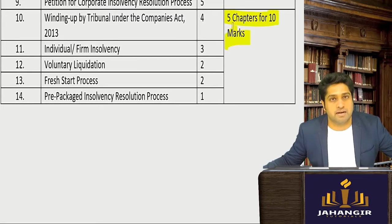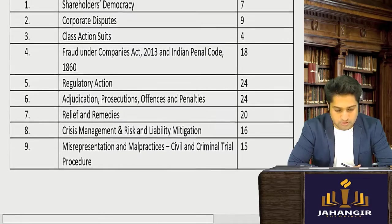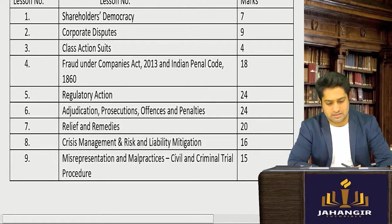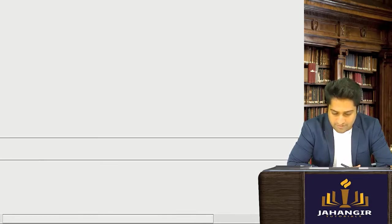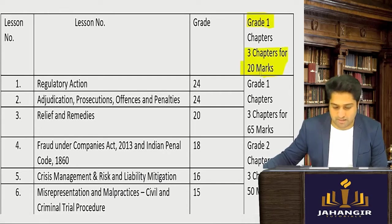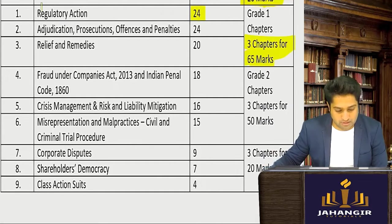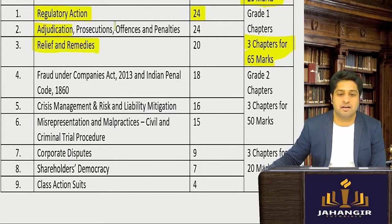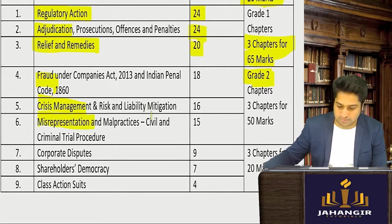Next comes corporate disputes. There are very few chapters, and the exam asks from every single chapter. But some chapters have high weightage. Grade one chapters are three chapters for 65 marks in your exams — that's regulatory action, adjudication, relief and remedies. Grade two chapters include fraud, crisis management, and misrepresentation — three chapters for around 50 marks.